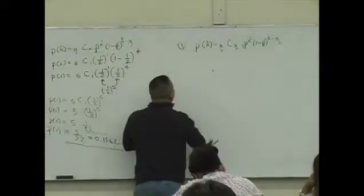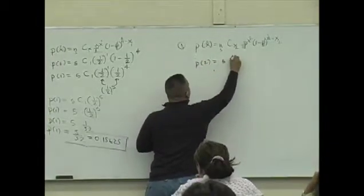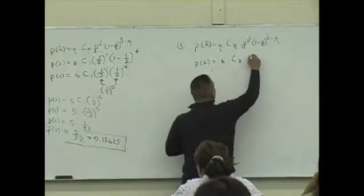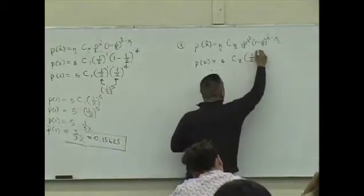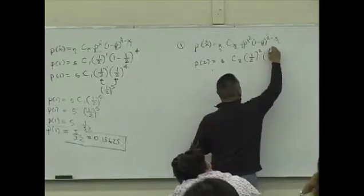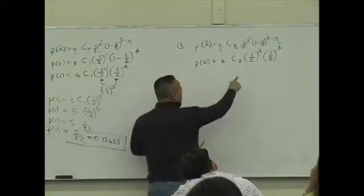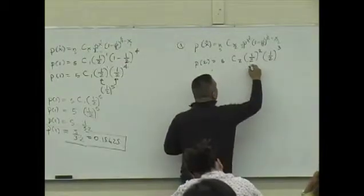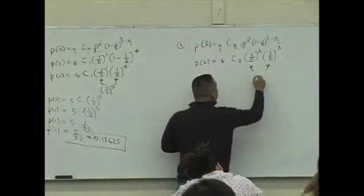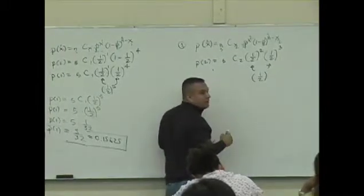So here we go. p of 2 is 5c2. 1 half to the what? Second power. What's 1 minus 1 half? 1 half to the, what's 5 minus 2? 3. What's happening here again? Same base, different powers. Same base, different powers. What is that? What is it? 5.